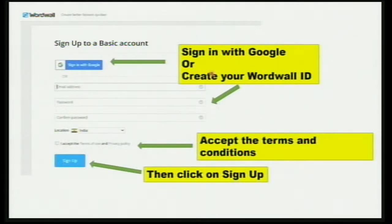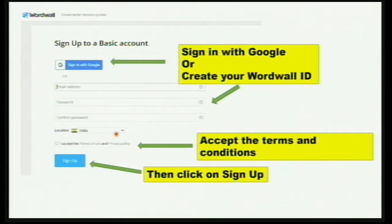You'll have to sign up into a basic account — either use your Google ID, or you can create your Word Wall ID right here. Give a password, confirm the password, then choose your location — the country that you reside in. You have to accept the terms and conditions and privacy policy. It is always a good habit to read the privacy policy and terms and conditions before signing up anywhere. Then click on Sign Up.